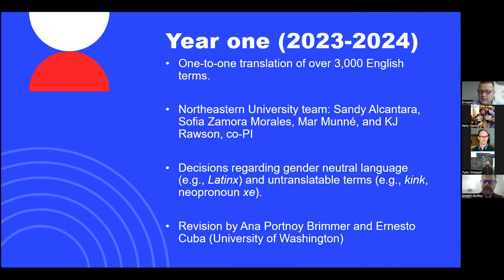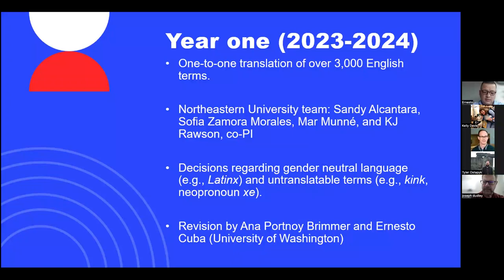Year one focused on Spanish language vocabulary development through one-to-one translation. Over 3,000 terms in the English language Homosaurus were translated to Spanish by a team of three Northeastern University undergraduate students, under the supervision of co-PI KK Rawson. The team spent over eight months translating terms, scope notes, and alternate labels while doing extensive research on their usage, evolution, and regional significance in Spanish-speaking countries.